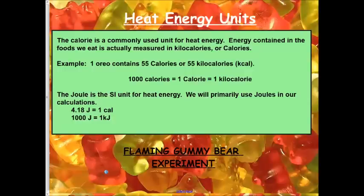The last thing we need to talk about is heat energy units. The calorie is a commonly used unit for heat energy. Energy contained in the foods we eat is actually measured in kilocalories or calories with a capital C. For example, one Oreo contains 55 calories or 55 kilocalories. Now 1,000 calories is the same as a kilocalorie. Fortunately in our calculations we're going to use the joule because the joule is the SI unit for heat energy. We have 4.18 joules is the same as one calorie and 1,000 joules is the same as one kilojoule.